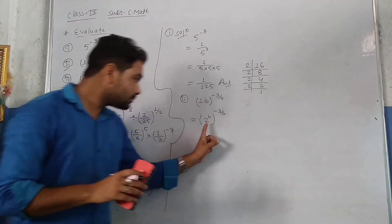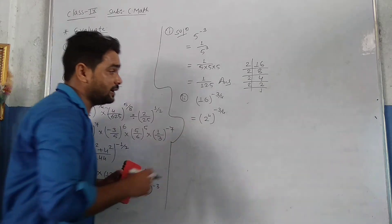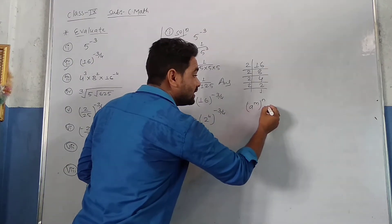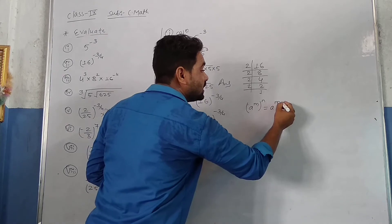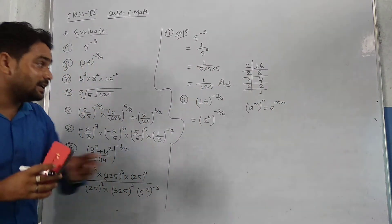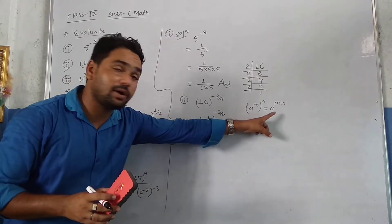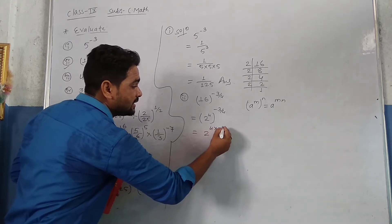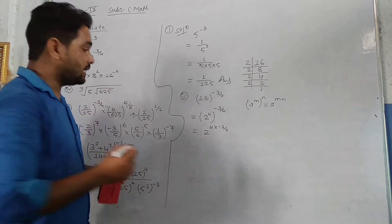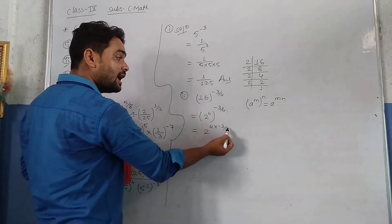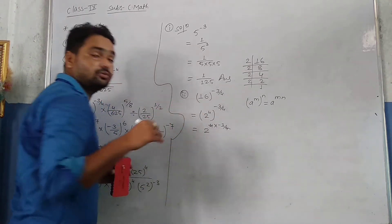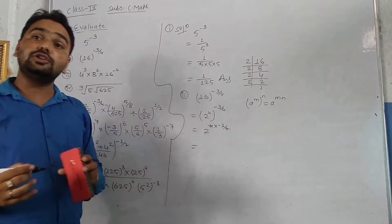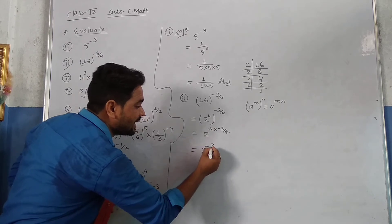We have the law: if A power M, whole power N is there, then we get A power M into N. The power N is multiplied. Here it is in the same form. So we apply the same law: 2 power 4 into minus 3 upon 4. Look at — 4 is upside and 4 is downside, so we can cancel easily. We get 1 into minus 3, which gives minus 3. So it becomes 2 power minus 3.